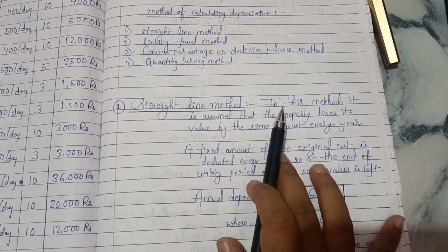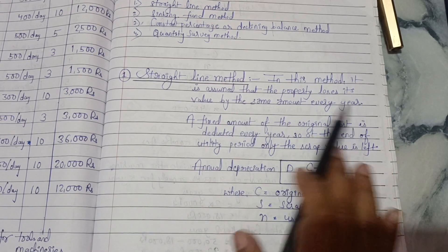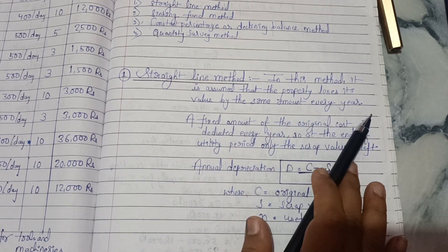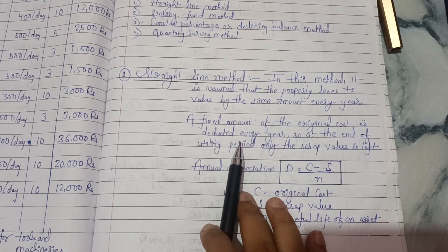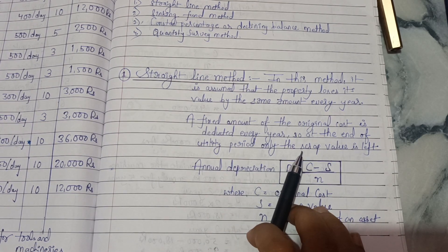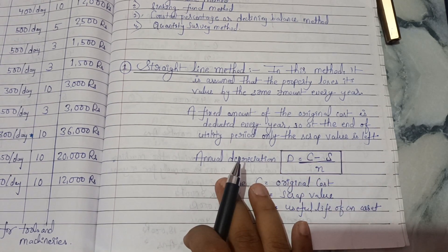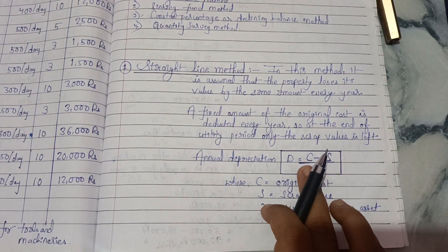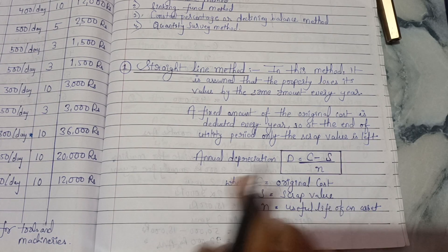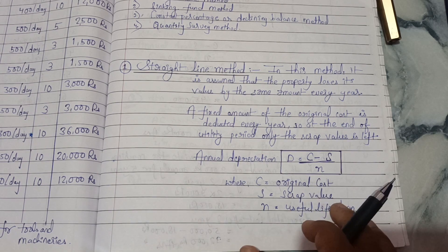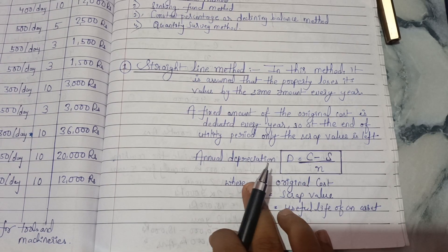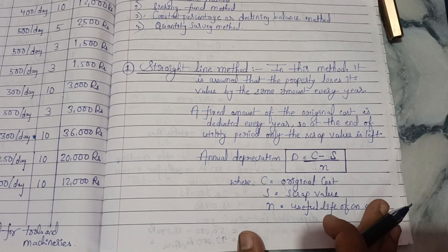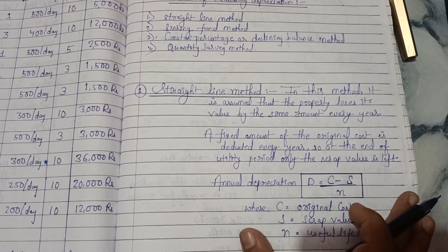In the straight line method, it is assumed that the property loses its value by the same amount every year. A fixed amount of the original cost is deducted every year, so at the end of the utility period only the scrap value is left. The annual depreciation is calculated as: Annual Depreciation = (C − S) / N, where C is the original cost, S is the scrap value, and N is the useful life of the asset, property, or building.